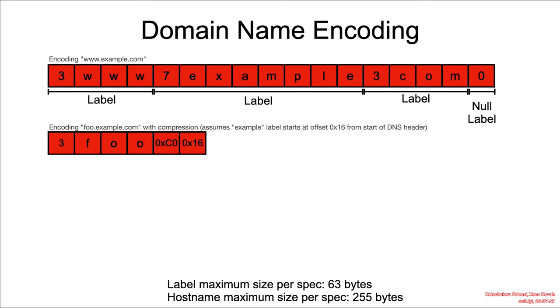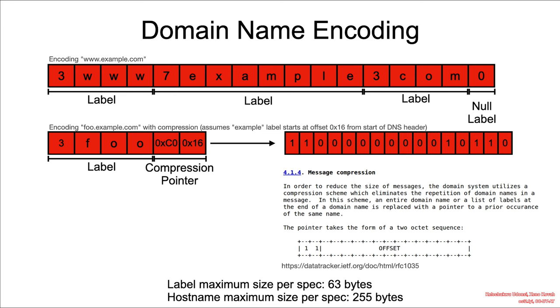Domain name packets also support compression. Essentially, you have the first label, and then you have what is referred to as a compression pointer. A compression pointer occupies two bytes. It serves the purpose of reducing the size of messages, especially when there are multiple records with the same domain names in a message.